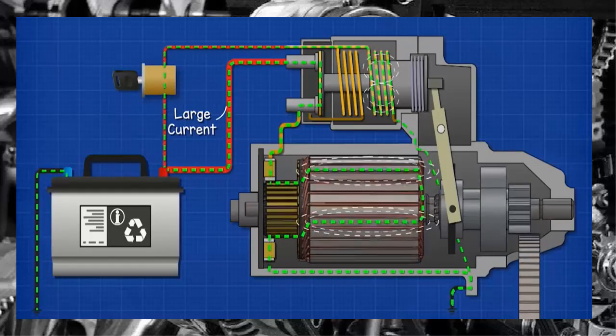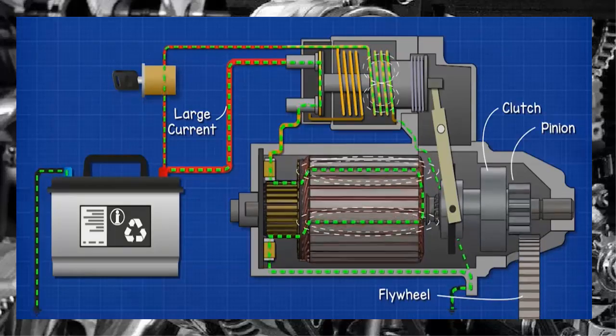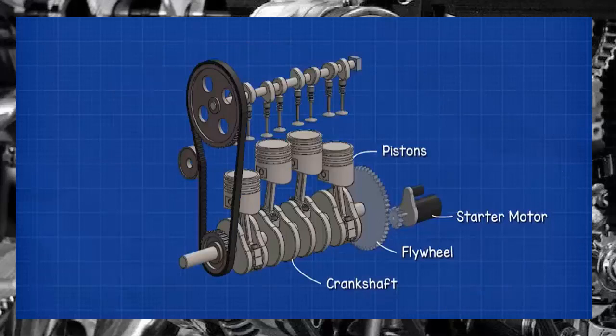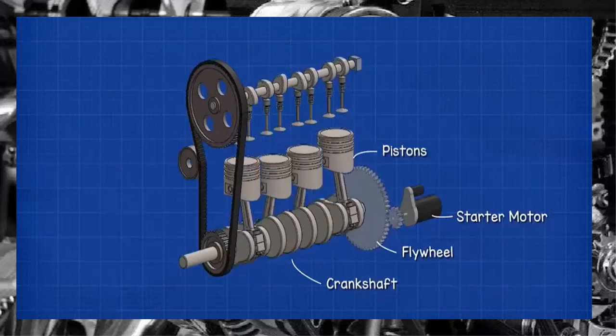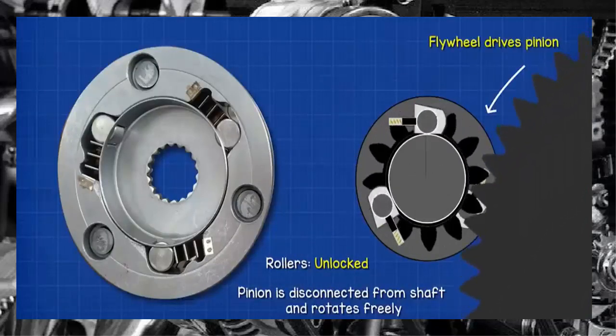The rotor transfers through the shaft, through the clutch, and into the pinion gear, which turns the flywheel. As the flywheel starts the combustion process, the engine will eventually begin to rotate the flywheel faster than the starter motor. This unlocks the overrunning clutch, so the pinion gear spins freely.